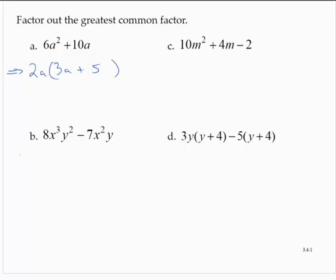In exercise B, 8x cubed y squared minus 7x squared y. 8 and 7 do not share any factors. x cubed and x squared share a factor of x squared. y squared and y share a factor of y. So we have x squared y times 8xy minus 7.